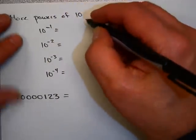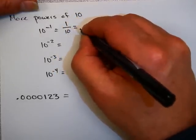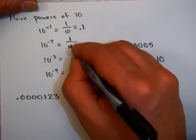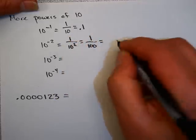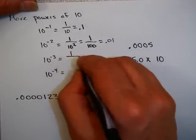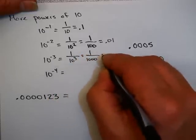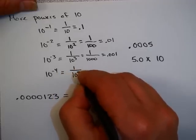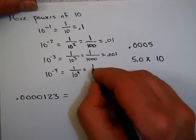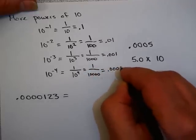Now, let's look at some negative powers of 10 so we can write small numbers. 10 to the minus 1 equals 1 tenth, which is 0.1. 10 to the minus 2 is 1 over 100, which is 0.01. 10 to the minus 3 is 1 over 1,000, which is 0.001. And 10 to the minus 4 is 1 over 10,000, which is 0.0001.